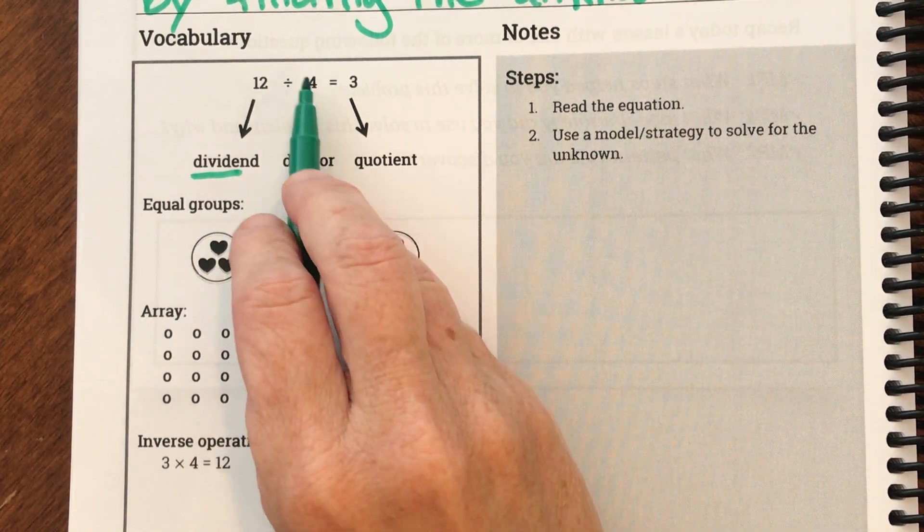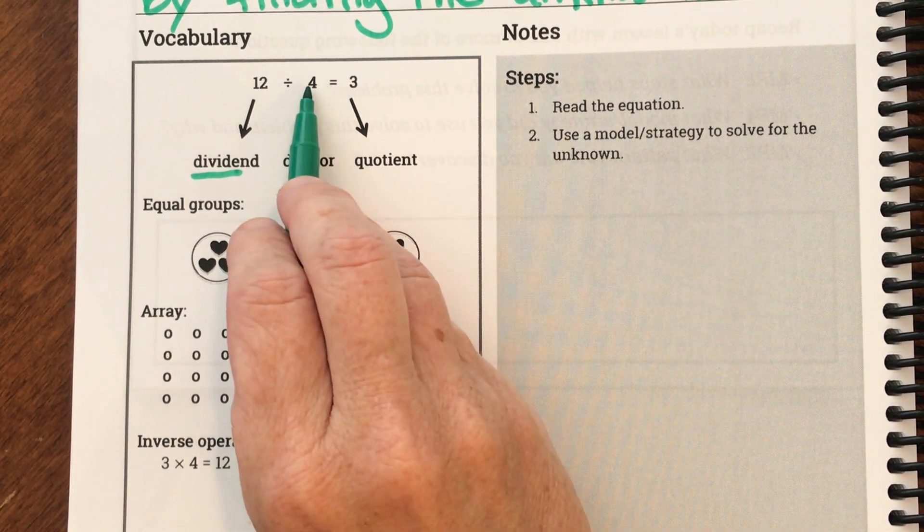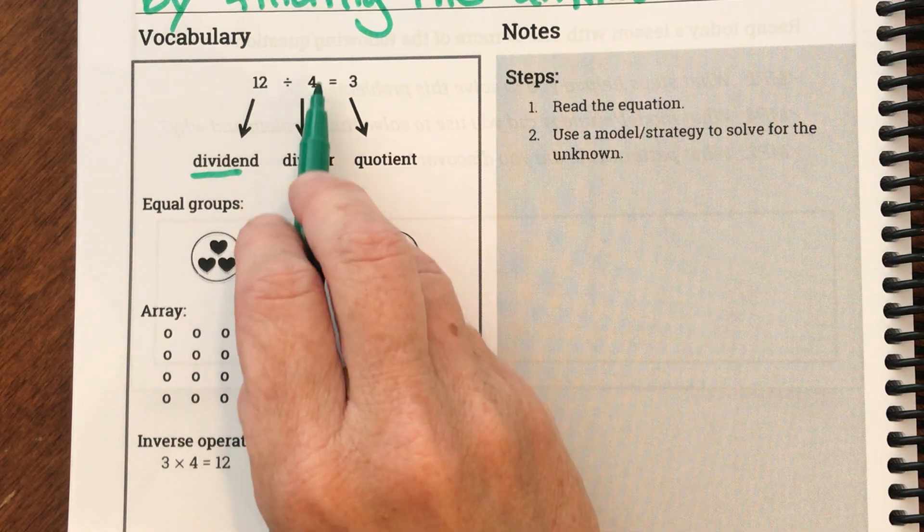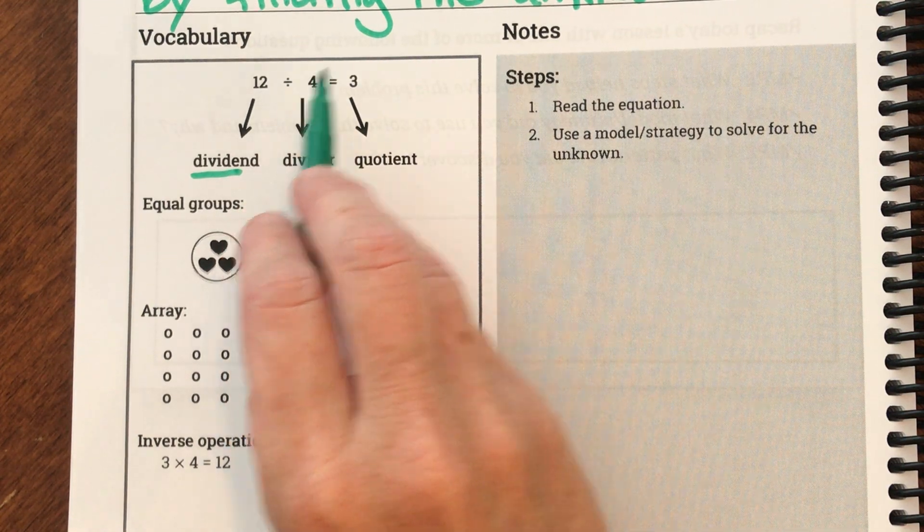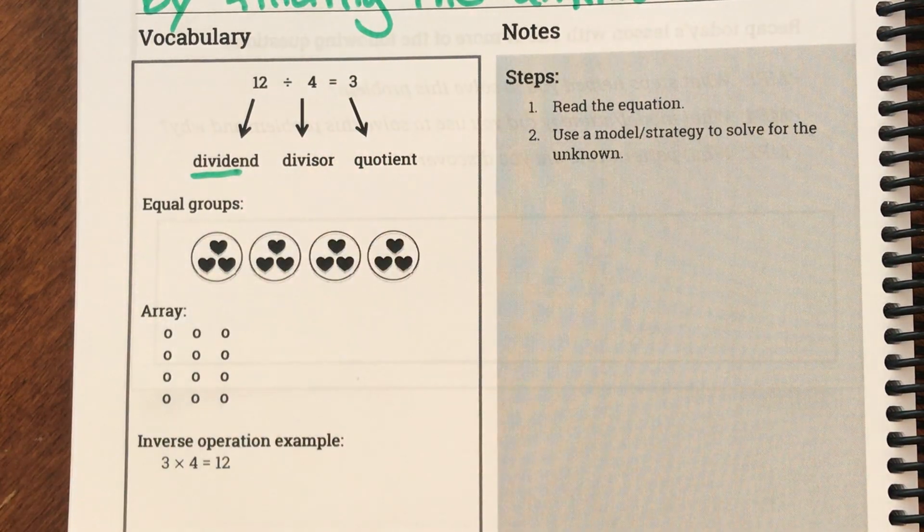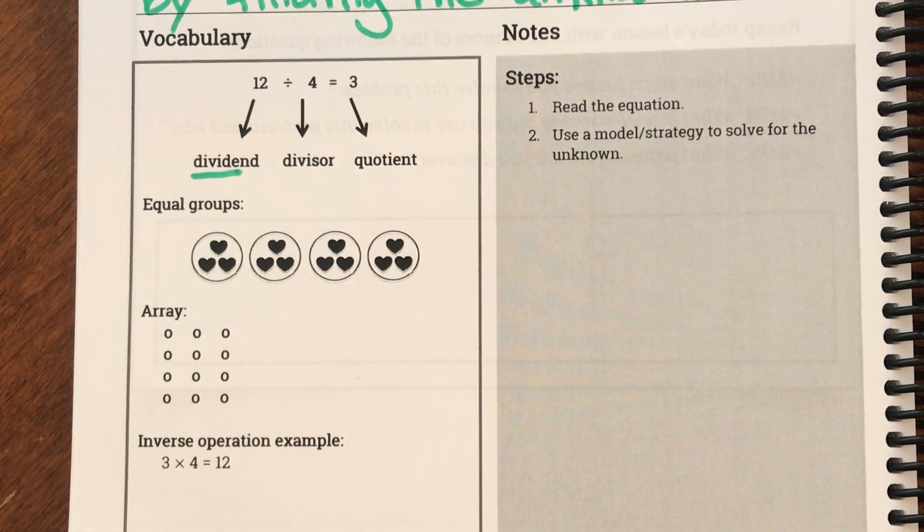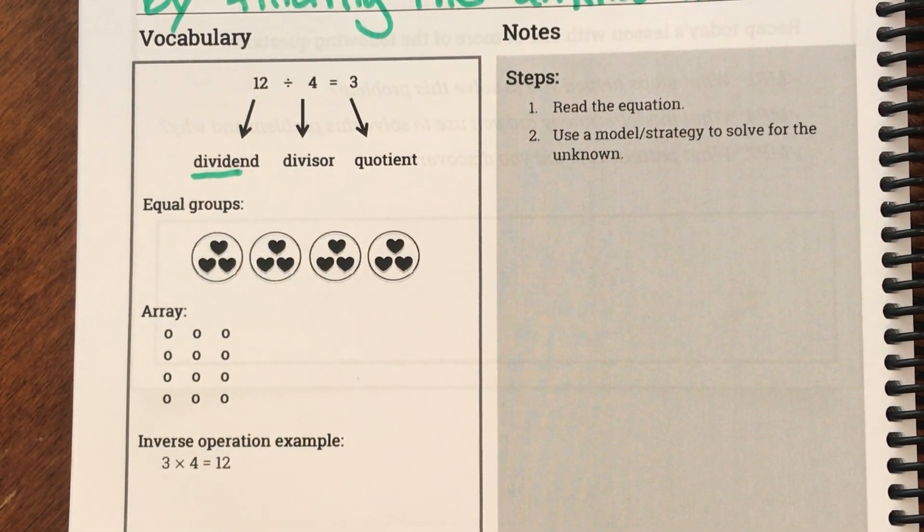The divisor and the quotient could tell us how many groups there are, or it could tell us how many there are in each group. And then the quotient would tell us the other. So these two tell us the number of groups and the number in the groups.